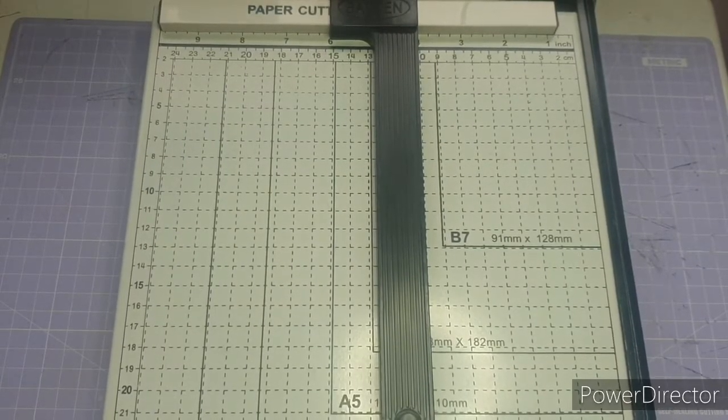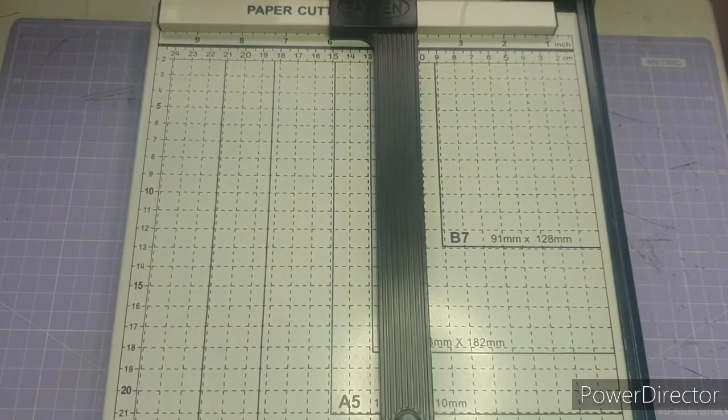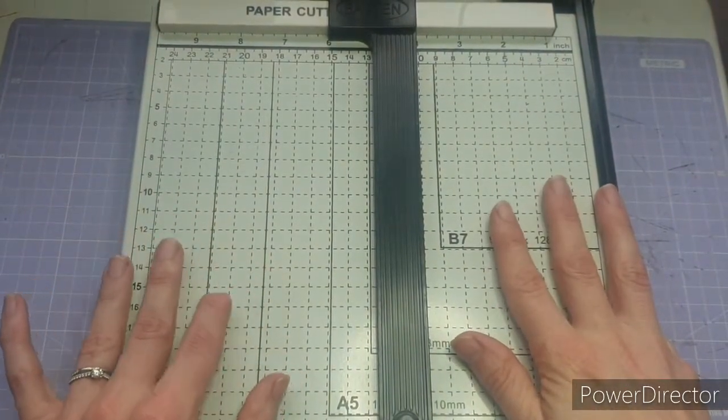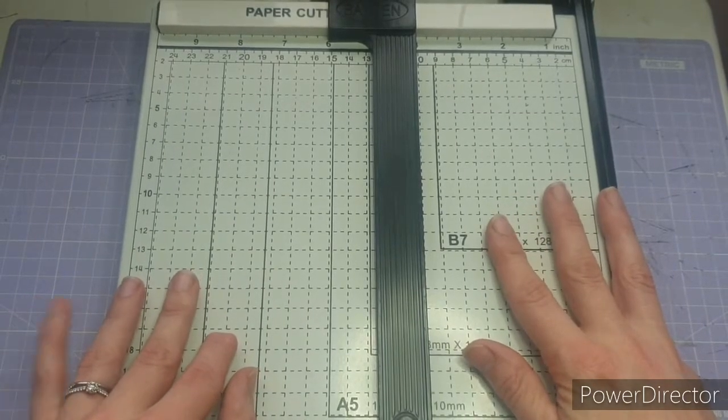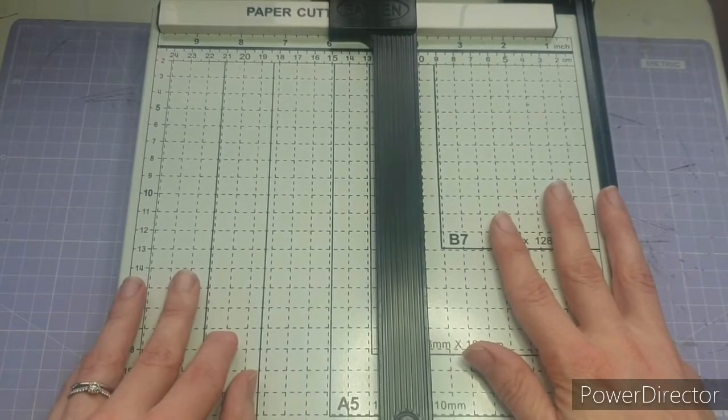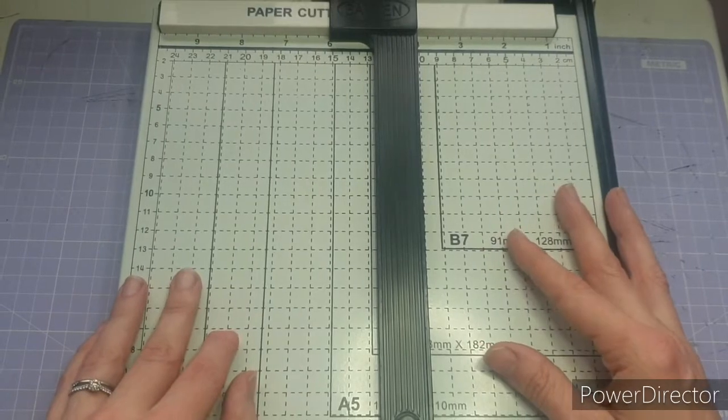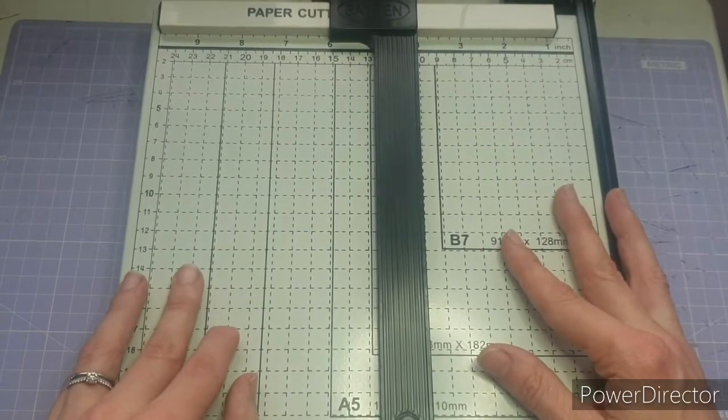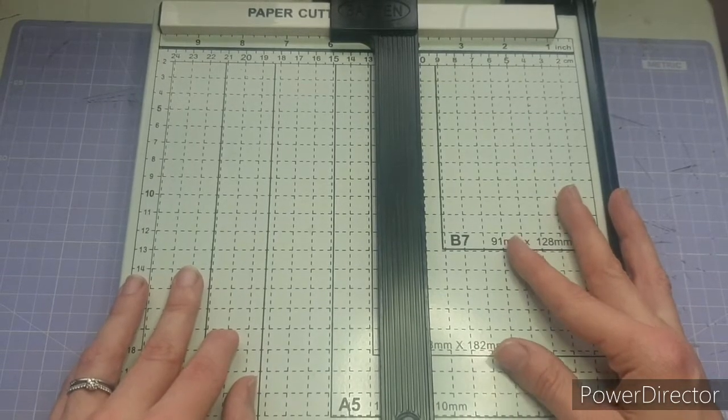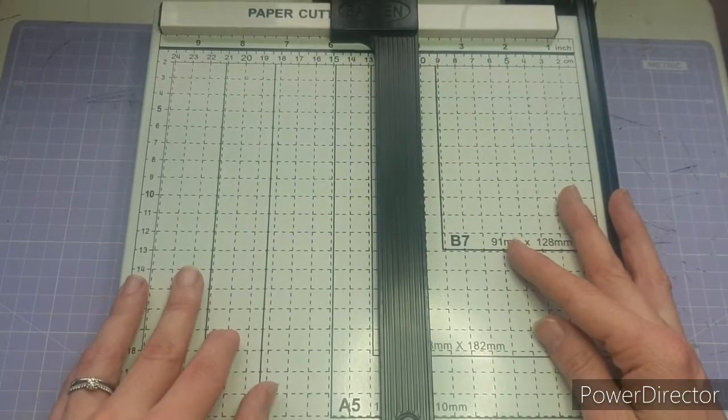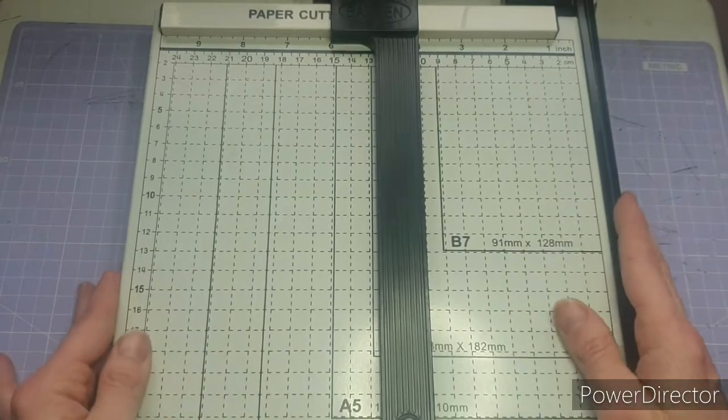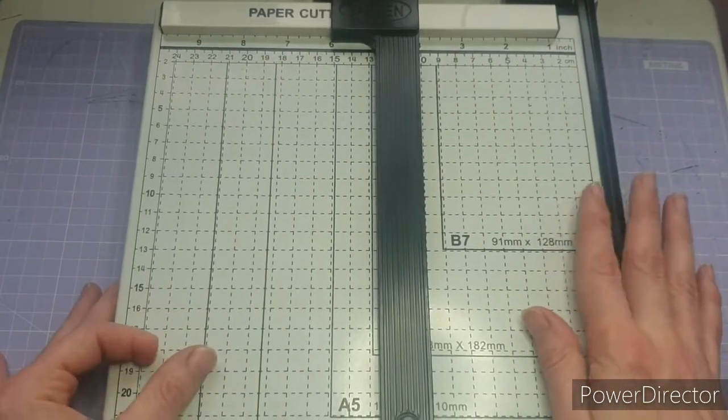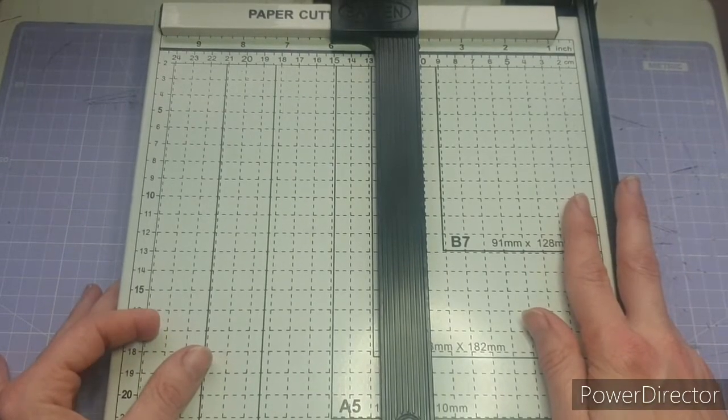When I purchased this, I didn't have at the time a paper trimmer and my guillotine was broken. So I needed something that was cheap and quite quick to get to me so that I could cut my cardstock and paper pads for my projects. So I had a little look around and I found this on eBay.